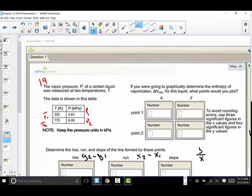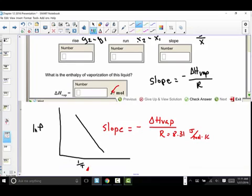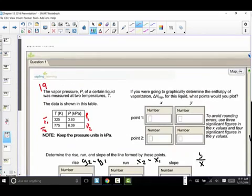So knowing that the x-axis on our graph, just to repeat, are the reciprocal temperatures. So what we need to do to find the first point on the x is to take the reciprocal of your T1, I'm sorry, 1 over 325. And you actually have to solve that to punch it into your sapling.